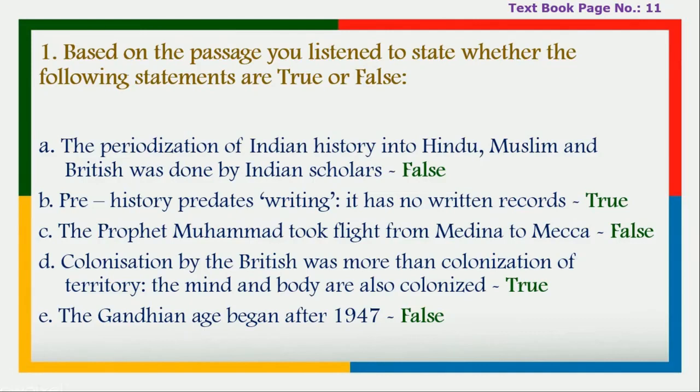Third: the Prophet Muhammad took flight from Medina to Mecca — Answer: false. Fourth: colonization by the British was more than colonization of territory — the mind and body are also colonized — Answer: true. Fifth: the Gandhian age began after 1947 — Answer: false.